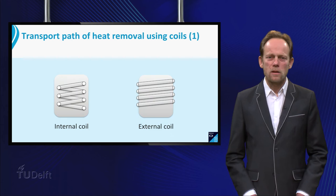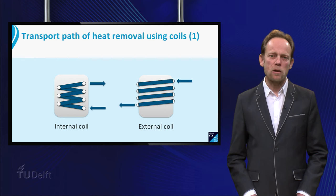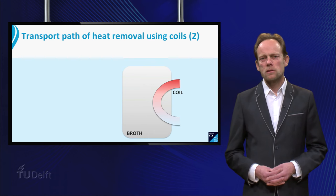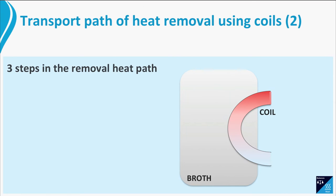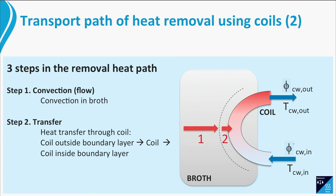We will have a look at cooling coils first, mounted either as a long spiral inside the reactor or welded as half pipes at the outside wall. A series of three steps is required to transport heat from the broth via the coils to the cooling water. First, there is a convective flow of heat from the bulk of the liquid to the coil. Second, there is transfer through a liquid film outside the coil, conduction through the coil material, and then transfer through a liquid film at the cooling water side. Third, there is a convective flow away from the system via the cooling water.